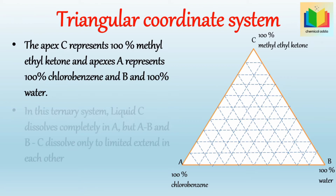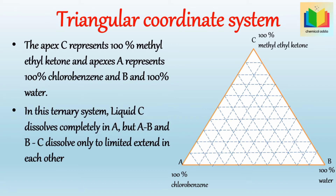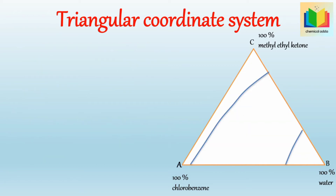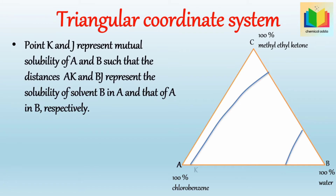In this ternary system, liquid C, that is methyl ethyl ketone, dissolves completely in A, that is chlorobenzene, but the pair of chlorobenzene and water, and the pair of water and methyl ethyl ketone, dissolve only to a limited extent in each other. Due to the partial solubility of these pairs, in the triangular diagram, points K and J represent the mutual solubility of A and B, such that the distances AK and BJ represent the solubility of solvent B in A, and that of A in B, respectively.